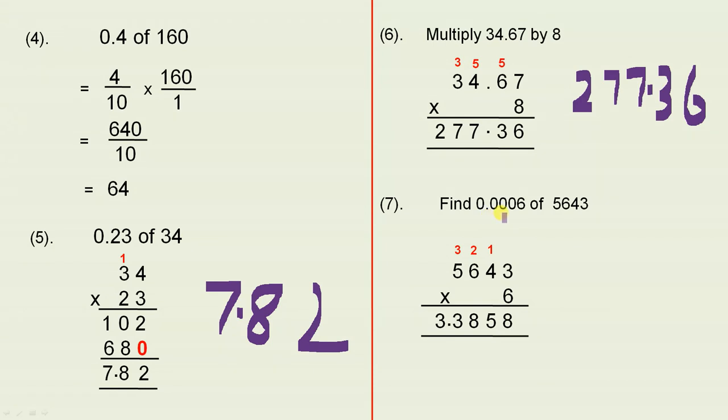And find 0.0006 of 5643. This looks difficult, but basically all you're doing, you're going 5643 times 6. When you do that multiplication, 6 threes are 18.